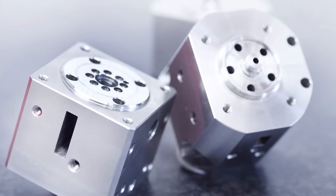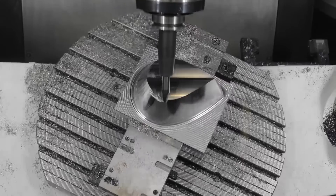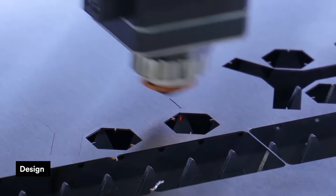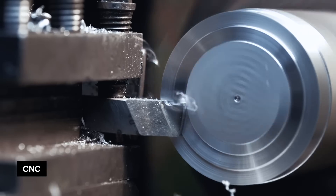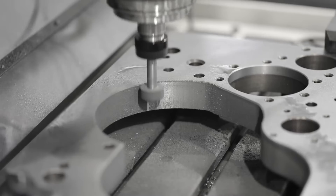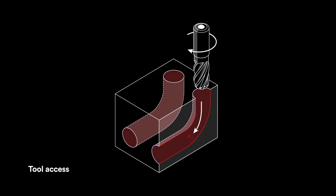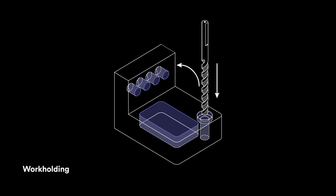In order to properly design parts for CNC machining, it's important to have a clear understanding of the different design restrictions. These restrictions are a natural result of the mechanics of the cutting process, and in particular: tool geometry, tool axis, workpiece stiffness, tool stiffness, and workholding.